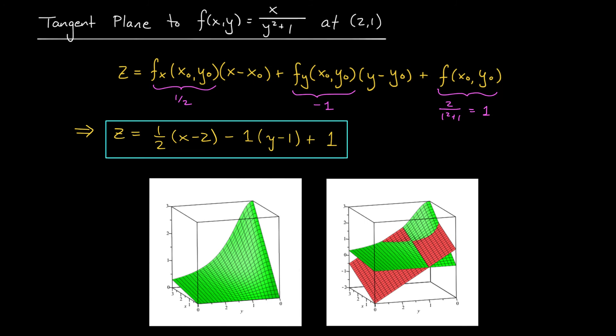To end this example, I've included the graph of the function z equals f of x, y in green. And the tangent plane we've just found is shown here in red. You can see that at the point (2, 1), the plane really is tangent to the curve.